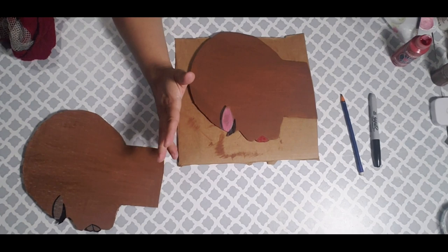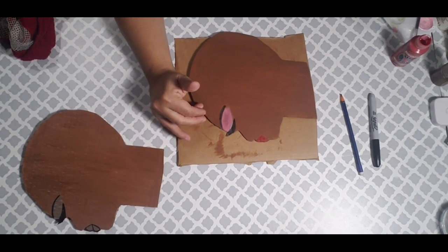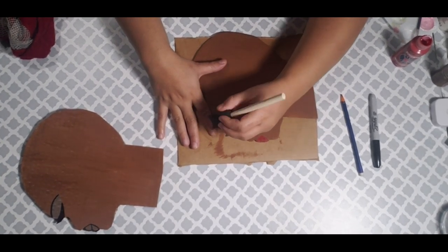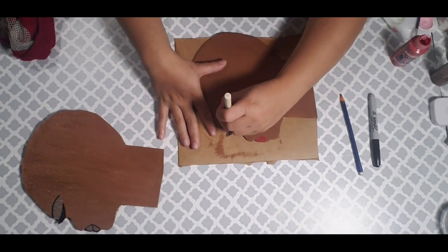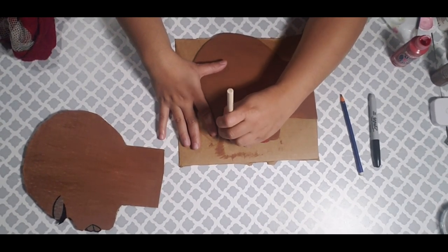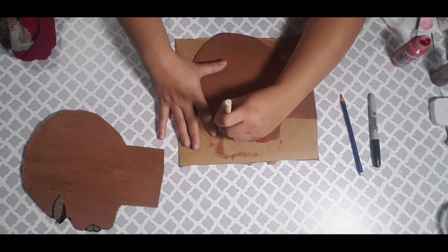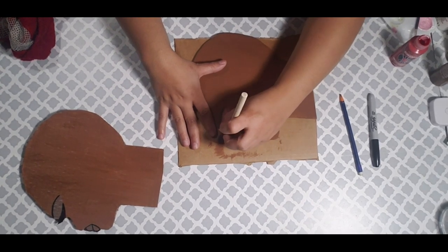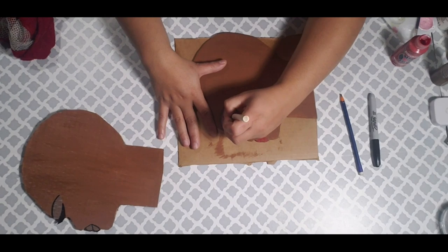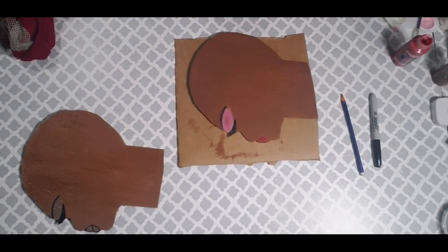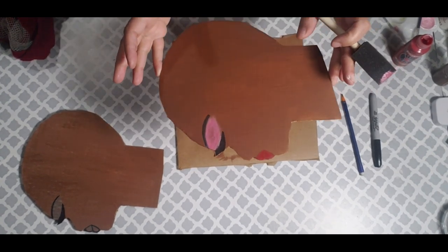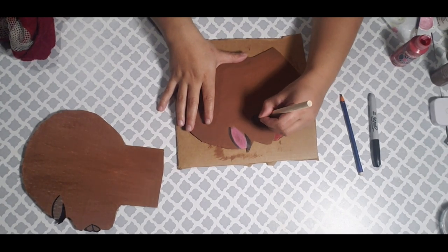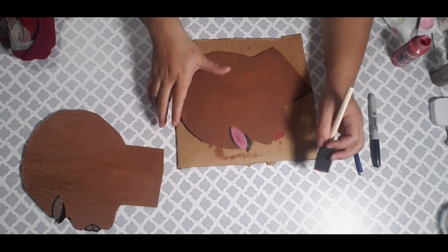Now another technique you could use is by getting the makeup foam brushes or the sponges, the makeup sponges and use that. But I would not suggest that you use real makeup on this because once you clear coat it, it's probably going to run off. I've never tried real makeup on these silhouettes because I've always done just paint. So yeah, that's how she looks like so far. You could also add some cheek makeup if you want to.